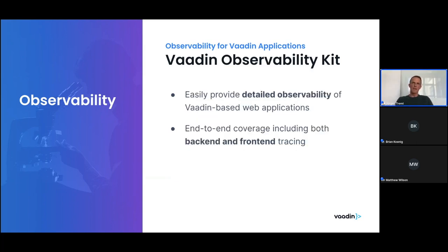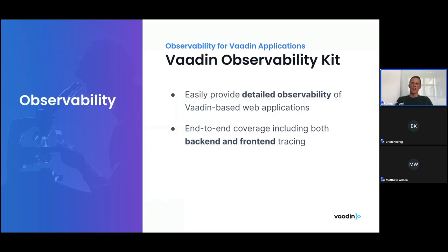What Vaadin Observability Kit gives you is detailed observability for your Vaadin-based web applications. It's very easy to integrate, and it does not only cover just the standard Java metrics — like basic JVM metrics, metrics about database pools, JPA queries — but includes a lot of Vaadin-specific information, like fetches from data providers, access to different UIs, files, navigation events, and so forth. It's back-end to front-end, end-to-end, covering both back-end and front-end parts of the application. You also get tracing information for client-side events and client-side errors, so it's a complete solution for your Vaadin-based application.